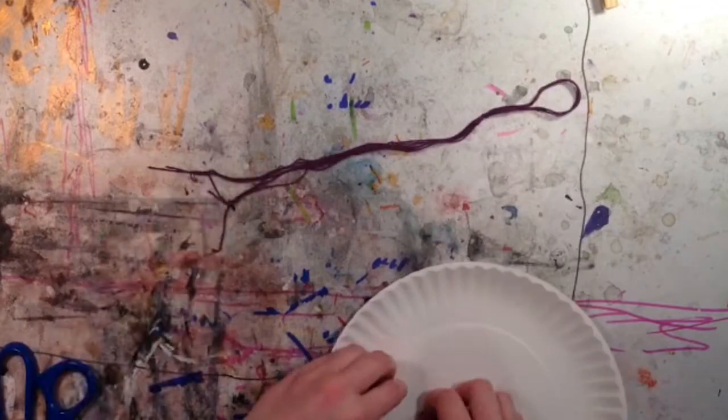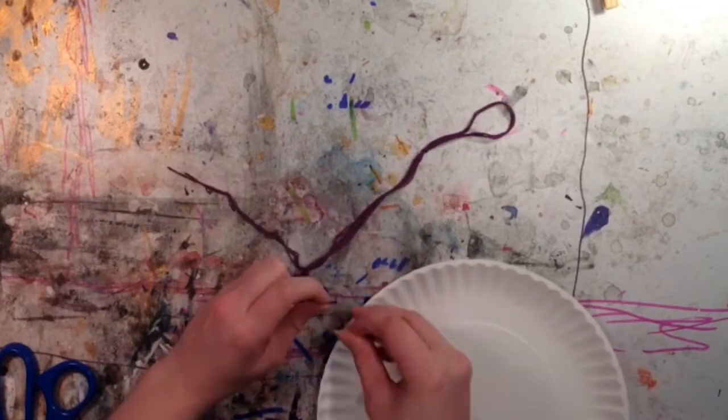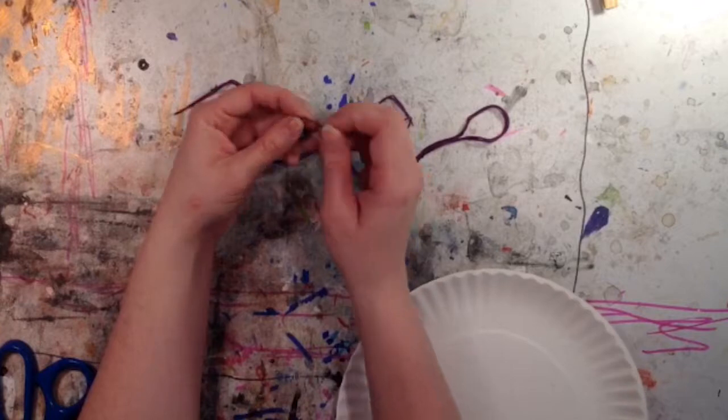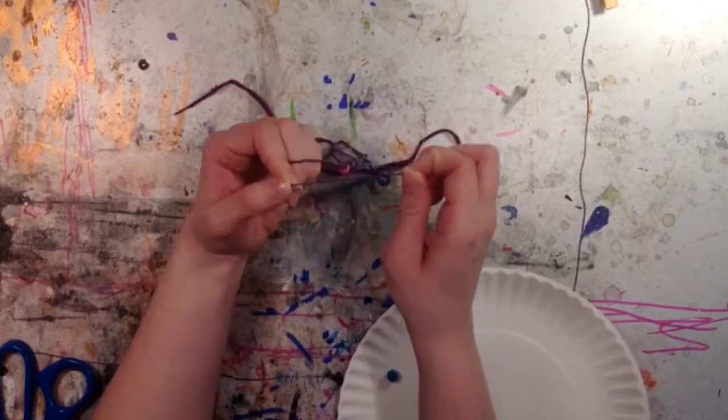Fold them in half and tie a knot near to the top to make the hanger. We want to keep a little bit hanging off the top to hook onto something.